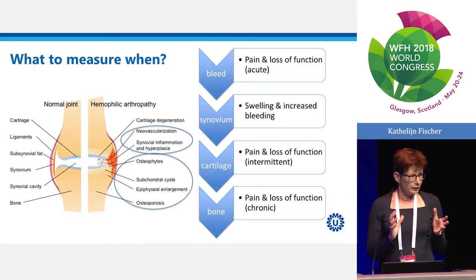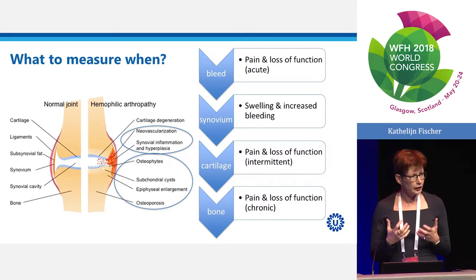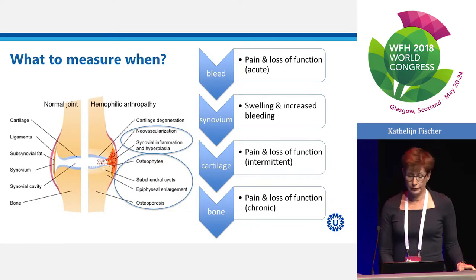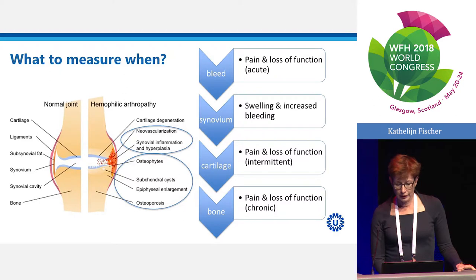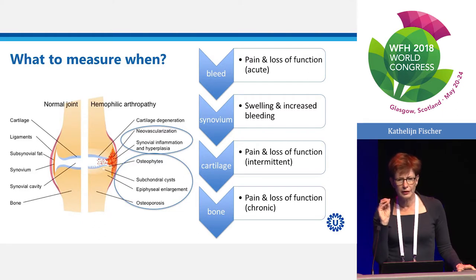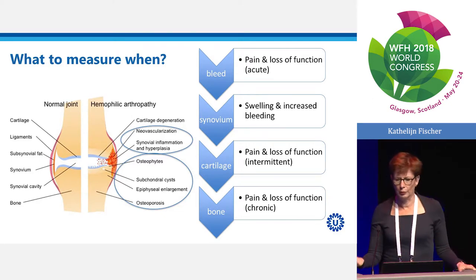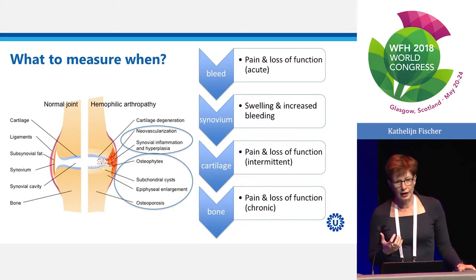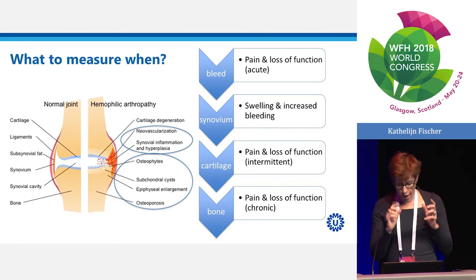The chain of events of joint damage determines what you're looking at. In an acute phase, you have a bleed, pain, and loss of function. Then you get synovial changes — incipient, with some swelling and increased bleeding, but it doesn't hurt, so the patient often doesn't complain. This is the beginning of problems. Then you get cartilage loss, pain, and intermittent loss of function. Then bony changes, chronic pain, and loss of function. You need to know your stuff.